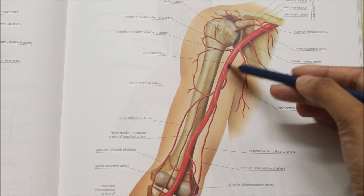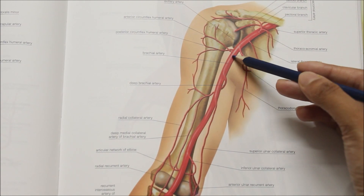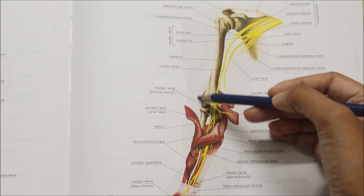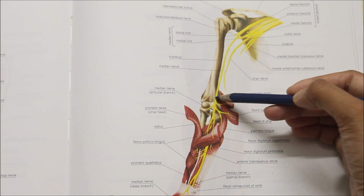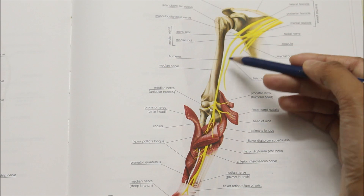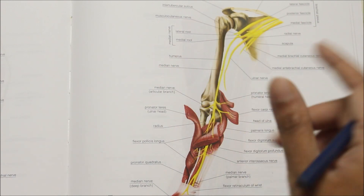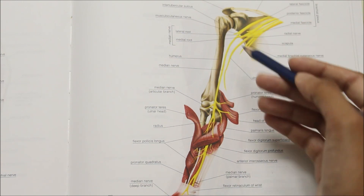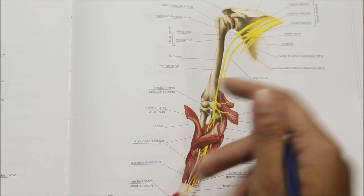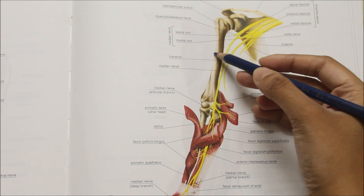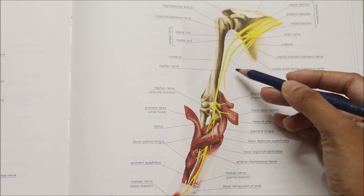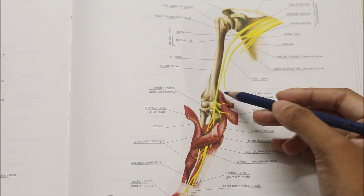Now let me show you the brachial artery. The median nerve is related to the brachial artery in the arm. Looking at the course of the median nerve up to the cubital fossa: in the arm, the median nerve is lateral to the brachial artery. The word lateral means away from the body and medial means towards the body. So the median nerve lies lateral to the brachial artery. In the middle of the arm, it crosses the brachial artery from the lateral to medial side and remains on the medial side right up to the elbow.